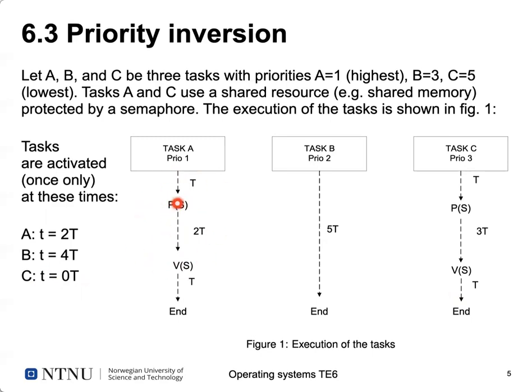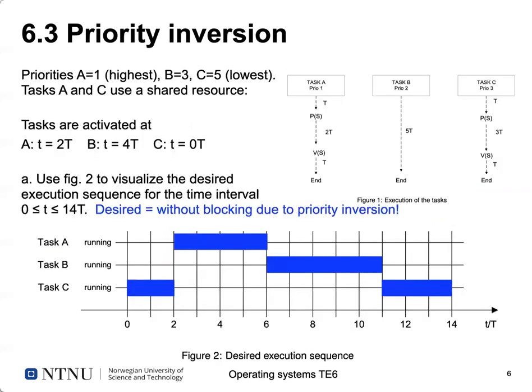The problem is that a task holding a shared resource blocks others from continuing. If task C acquires the semaphore first, task A cannot continue even though it has higher priority — it must wait for C to release the semaphore. Since semaphores cannot be forcibly removed from a process, task A is blocked waiting for a lower-priority task.